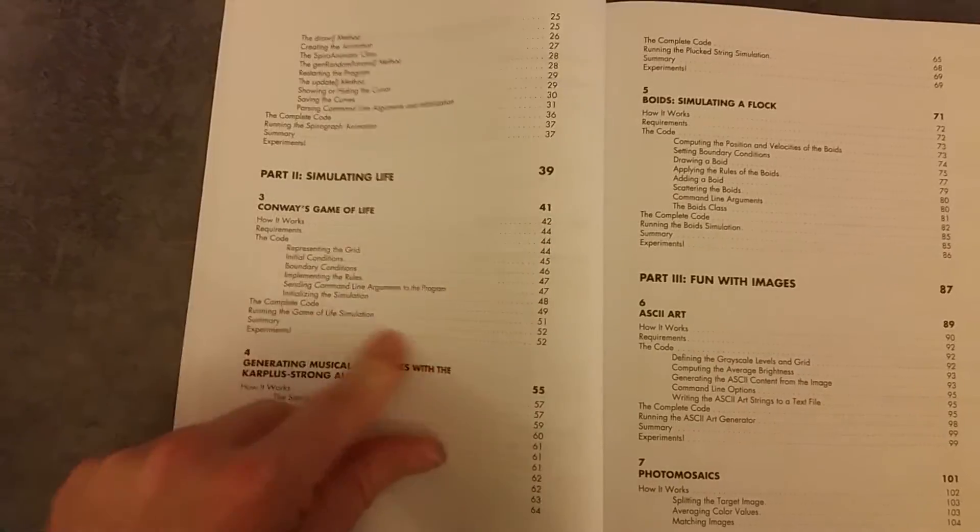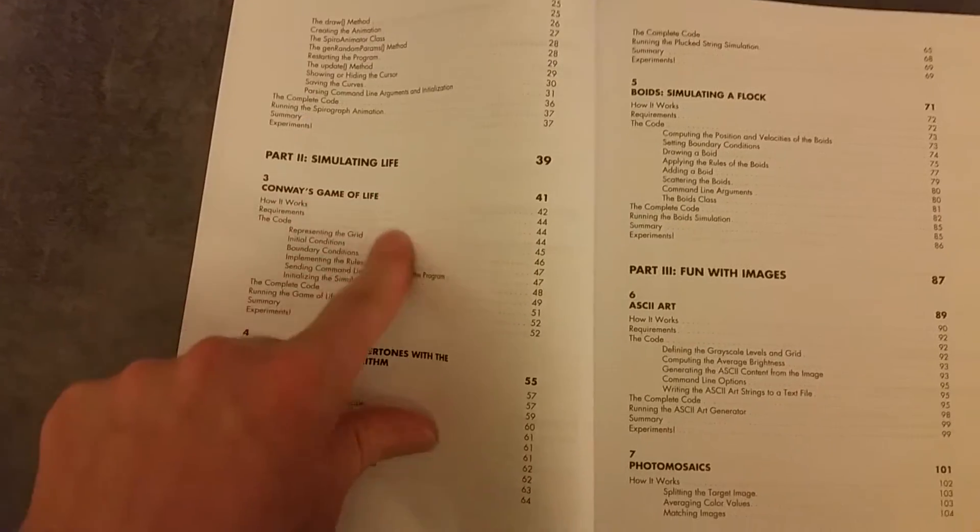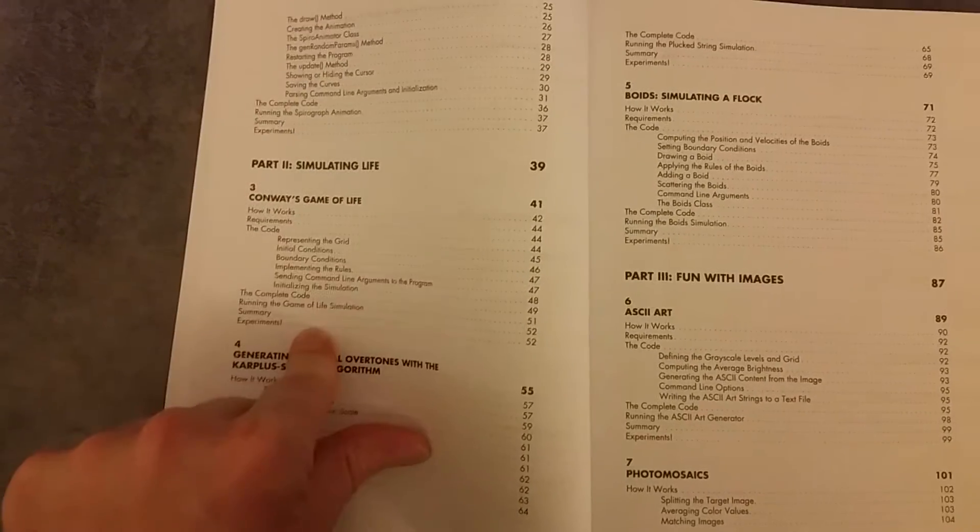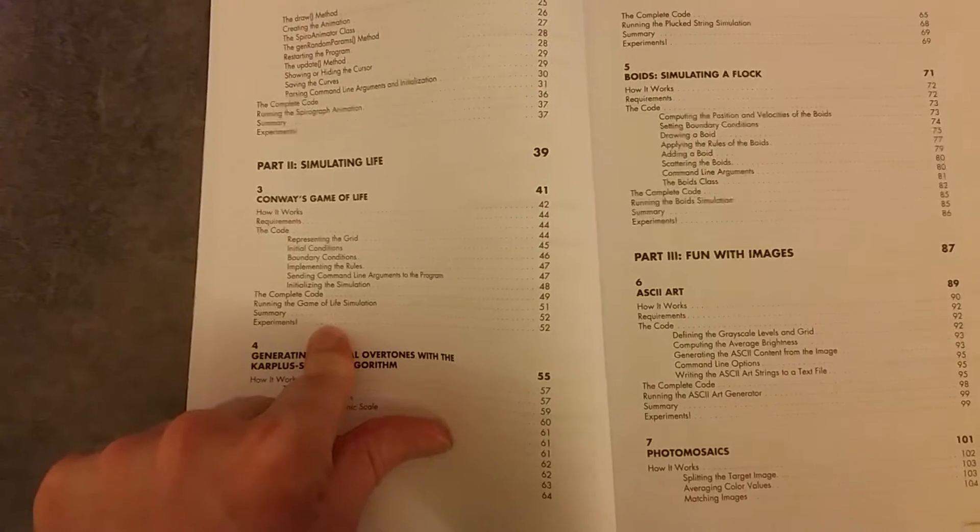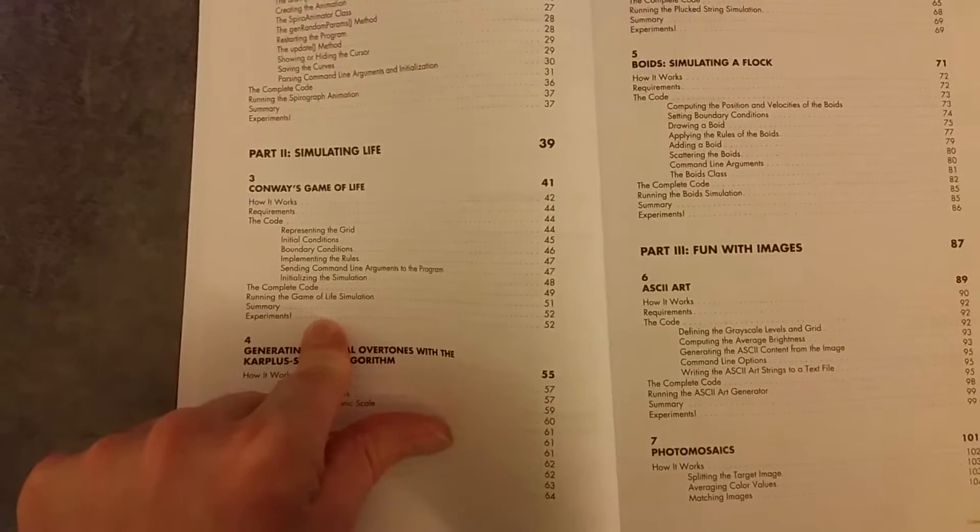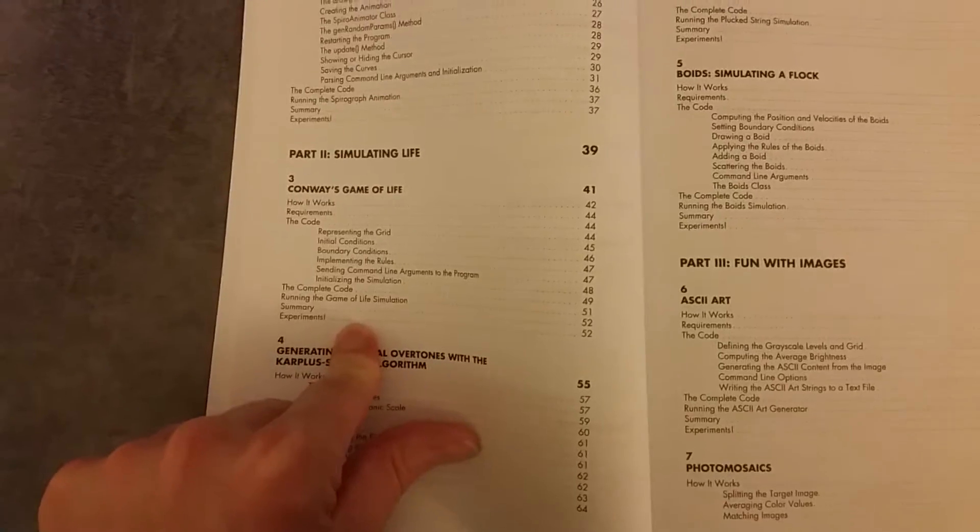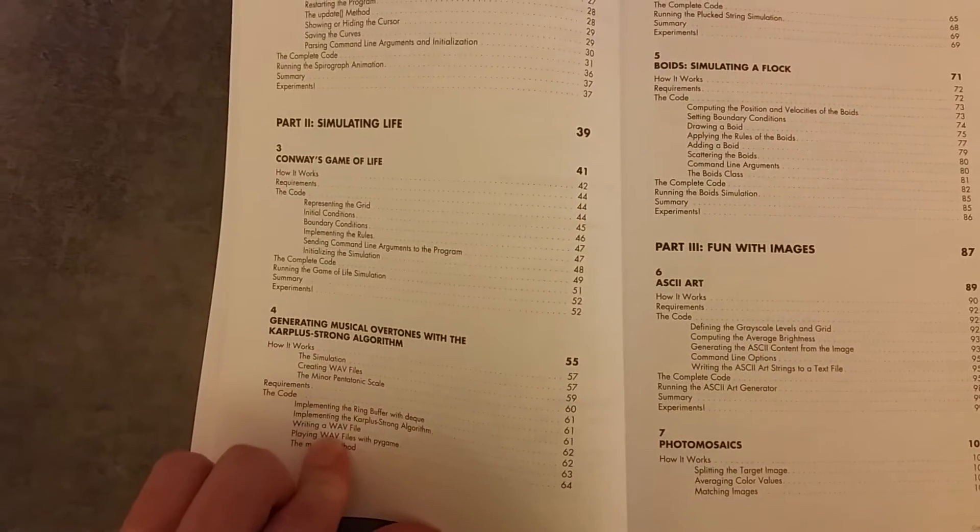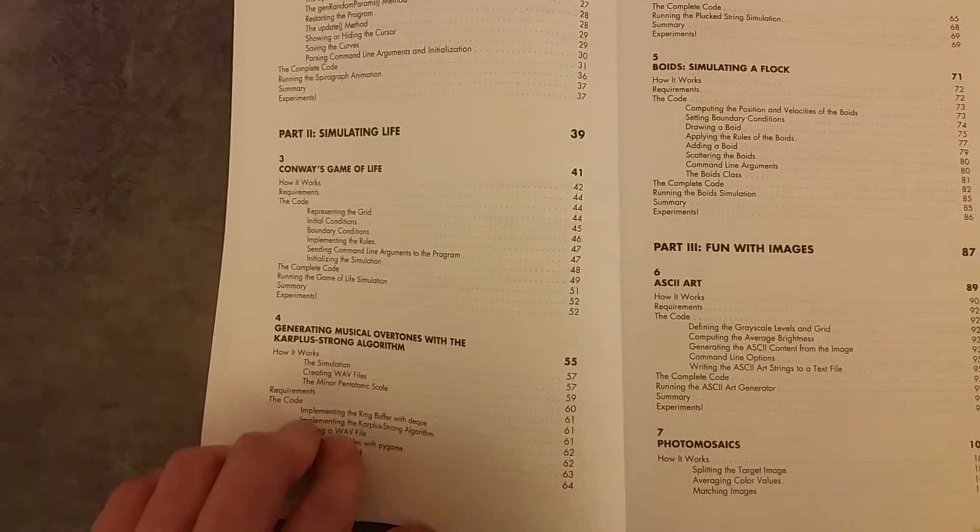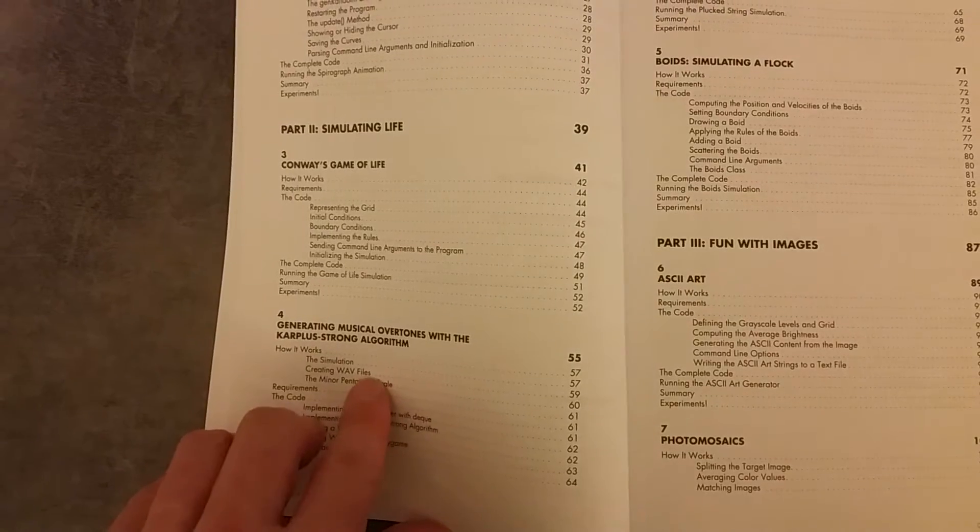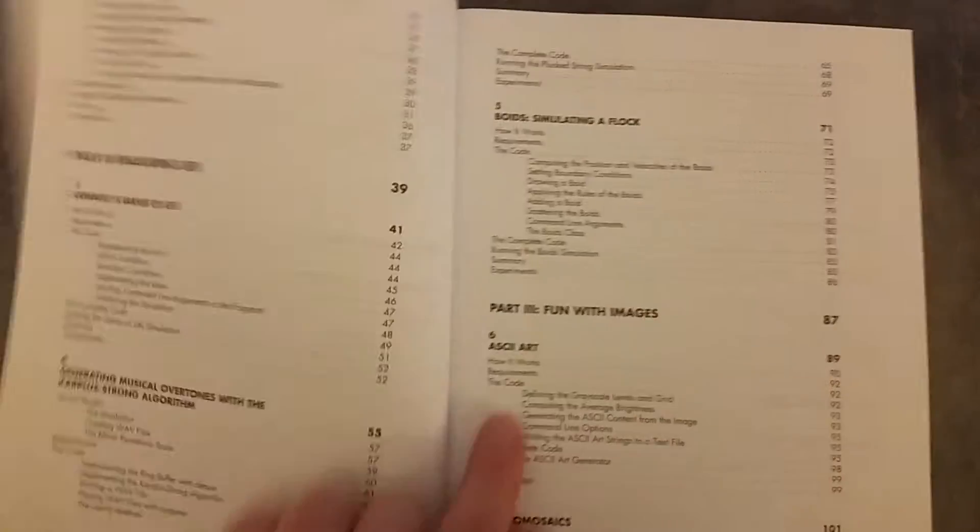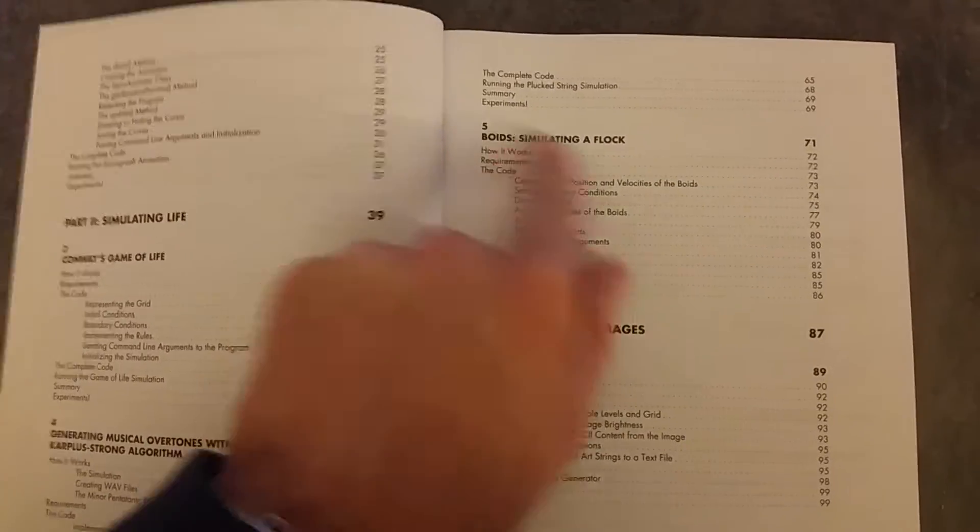This one, Conway's Game of Life. This is a really useful project in terms of applying maths to programming to answer a question. And then we look at this one generating musical overtones with the Karplus-Strong algorithm. So here we're learning how to apply an algorithm to data, that data being audio. This is simulating flocks of birds, chapter five.